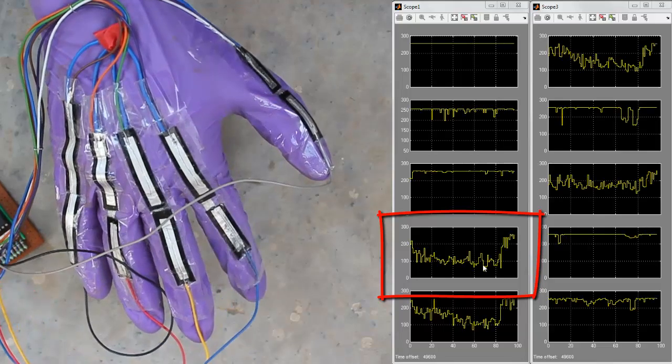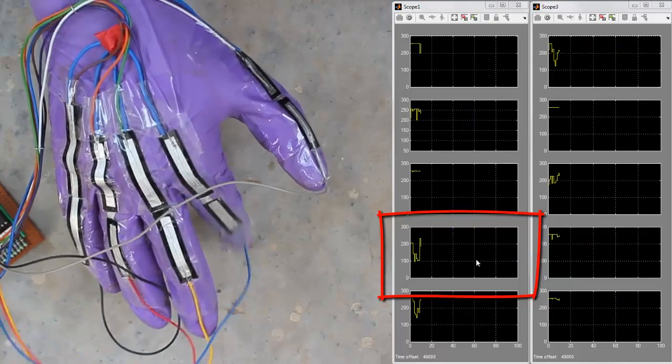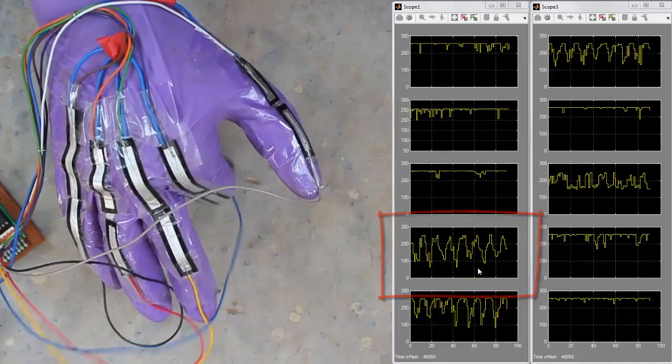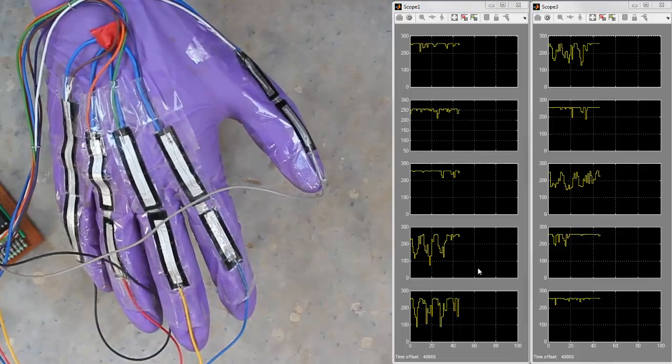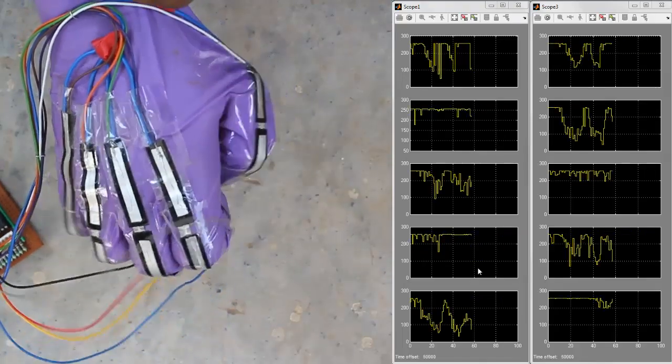When we bend the index finger, the voltage dips down. We can see that the voltage change follows the finger movement. When we open and close the fist, all the levels can be seen to change correspondingly.